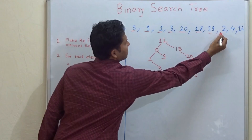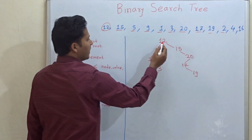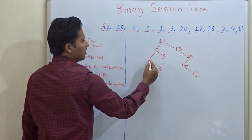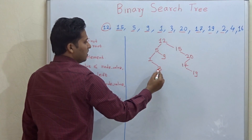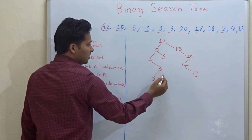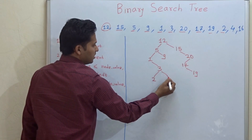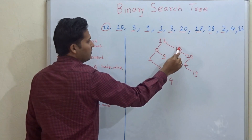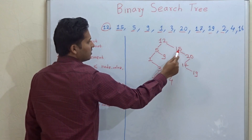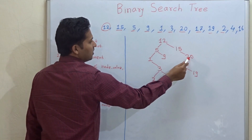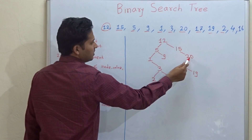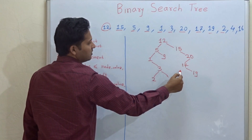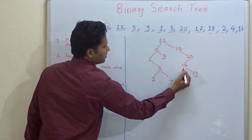Then 4: 4 is less than 12, less than 5, greater than 1, and greater than 3, so 4 comes to the right of 3. Then 16: 16 is greater than 12, greater than 15, less than 20, and less than 17, so 16 is placed to the left of 17.